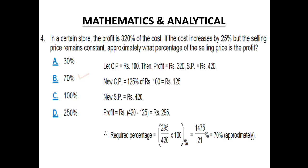Now the new cost price is 125% of Rs. 100. That means it is now Rs. 125. New sale price is still the same as it is mentioned that the selling price remains constant. So the selling price will be 420. So the profit is 420 minus 125 equals Rs. 295. Required percentage is 295 divided by 420 multiplied by 100. You get the answer as 70% which is option B.